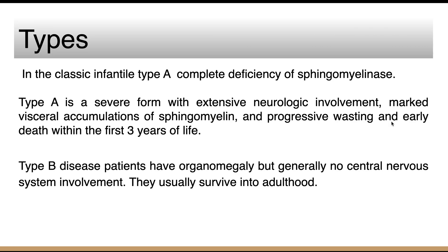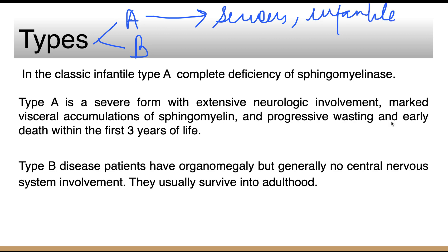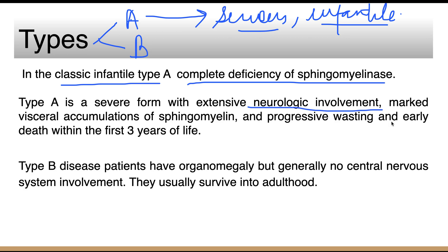Type A is a serious infantile form that leads to early death. There is CNS involvement. In type A, there is complete deficiency of sphingomyelinase. It is a severe form with neurological involvement, and death usually occurs within the first three years of life. There is no curative treatment available for type A — management is symptomatic only.